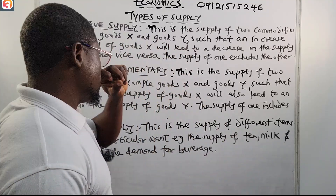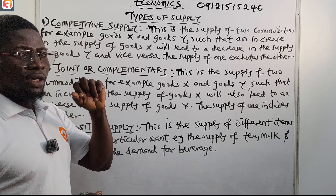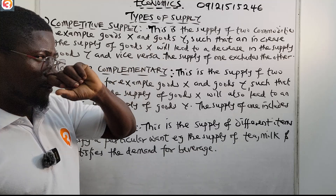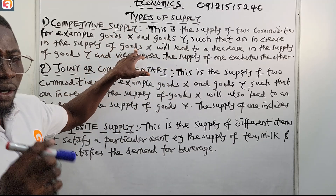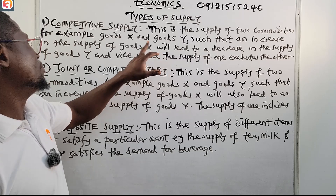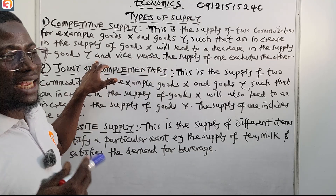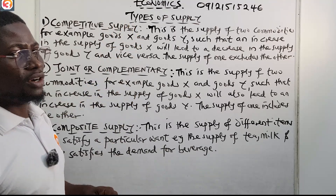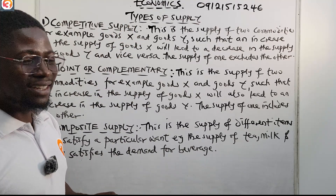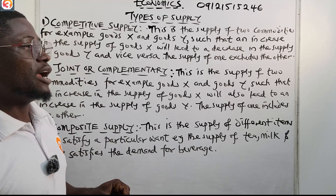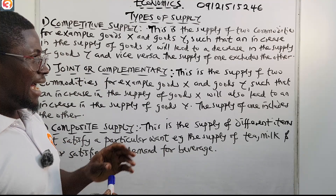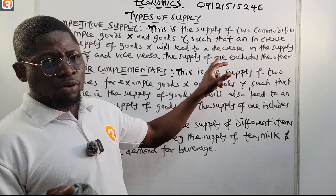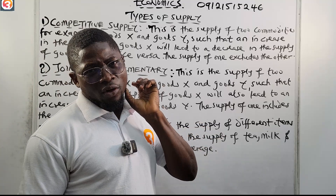Let us look at competitive supply. This is the supply of two commodities — for example goods X and good Y — such that an increase in the supply of one of the goods will lead to a decrease in the supply of the other, and vice versa. An increase in the supply of one leads to a decrease in the supply of the other. It is the supply of goods in which supplying one excludes the other.